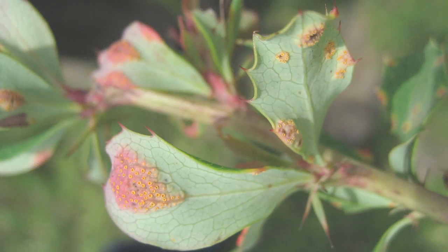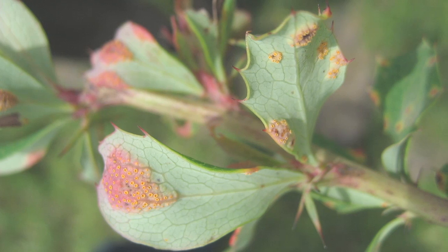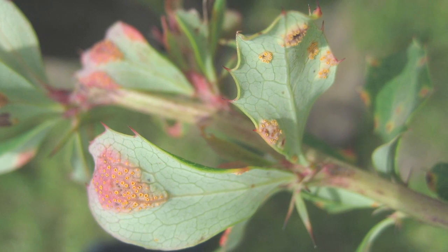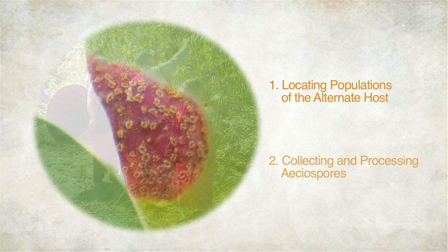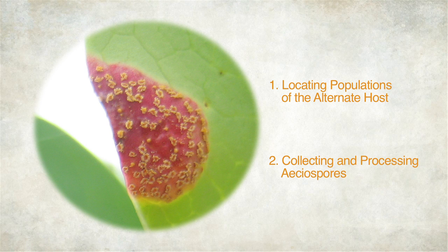Monitoring the barberry hosts of stem and stripe rust in wheat-growing regions around the world is therefore vital to our ongoing global rust surveillance work. This instructional video on isolating wheat stem and stripe rust from barberry species is intended as a reference for those researchers interested in contributing to this effort. To determine the role local populations of barberry may play in the emergence of new races of wheat stem and stripe rust, two significant challenges must be overcome. First, relevant populations of the alternate host must be located. And second, aecial infections found on plants within those populations must be carefully processed to determine if indeed they are the result of cereal rust infection, and if so, which cereal host they specialize on. We will address each of these challenges in turn.